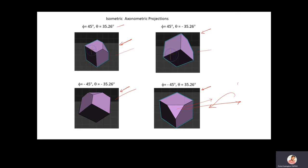Isometric projections are far better than trimetric and dimetric projections. However, there are limitations: any type of axonometric projection fails when the object contains a curved or circular surface. This problem will be handled by a new type called oblique projections, which will correctly project objects with curved or circular surfaces. With this, the three types of axonometric projections are complete.